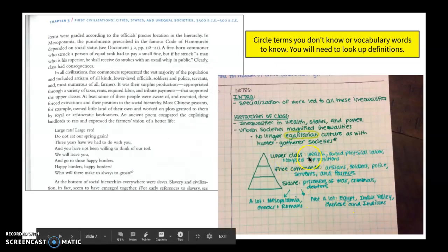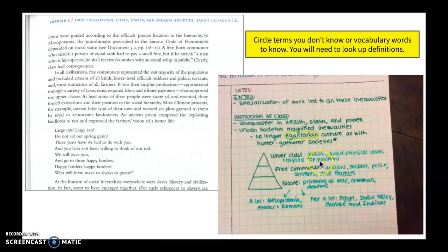And so then as I read through this, I realized, OK, upper class, you have the wealth, you avoided physical labor, and you occupied top positions. If I wanted to, I could go into more depth about what those top positions are. But for right now, that's all I really need to know. As I'm talking with a classmate and collaborating later, maybe I want to add to or we're going to dive back into our textbook to then look at those top positions.